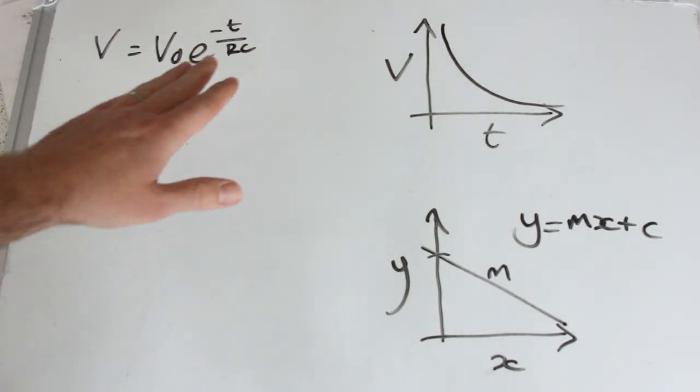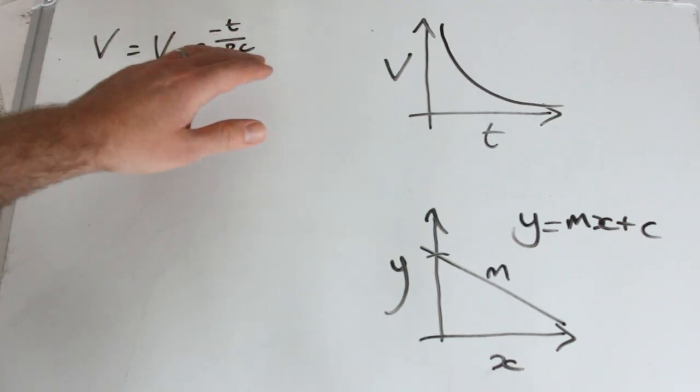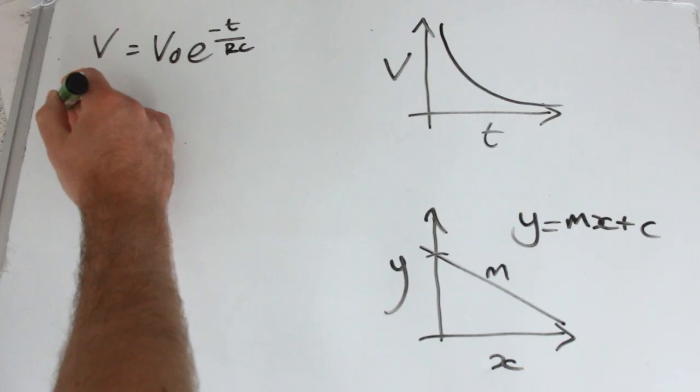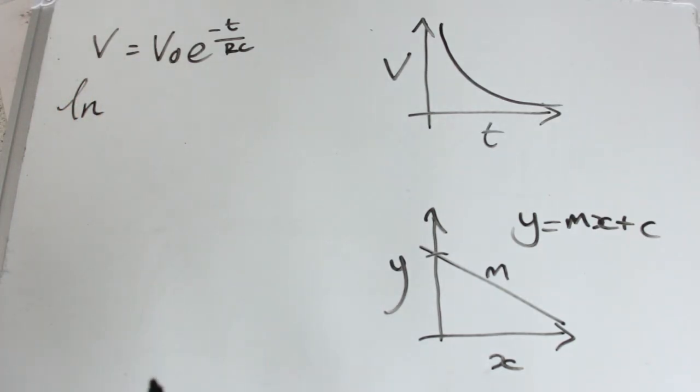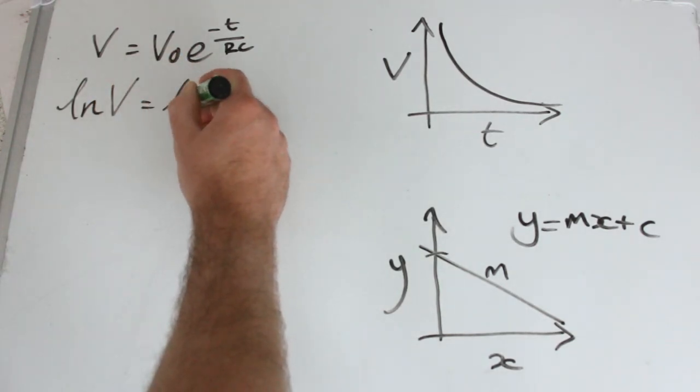So to get access to these ones, what we need to do is apply our inverse of e to the power of. And the inverse of e to the power of is the natural logarithm or it's often referred to as LN. You'll find that as a button on your calculator LN. So we take natural logs of the whole equation.